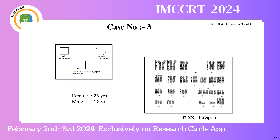In Case 3, the chromosome finding of the PoC was trisomy 16 along with 9 QH plus. Parental karyotyping was done and it was found that the parent had 9 QH plus. Thus, there may be some genes present in the 9 QH region which may have a role in mitotic division, causing this type of abnormality in progeny.